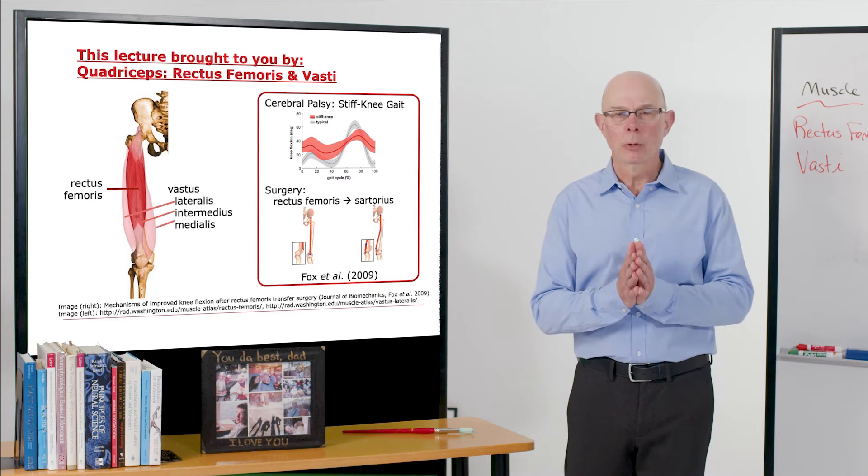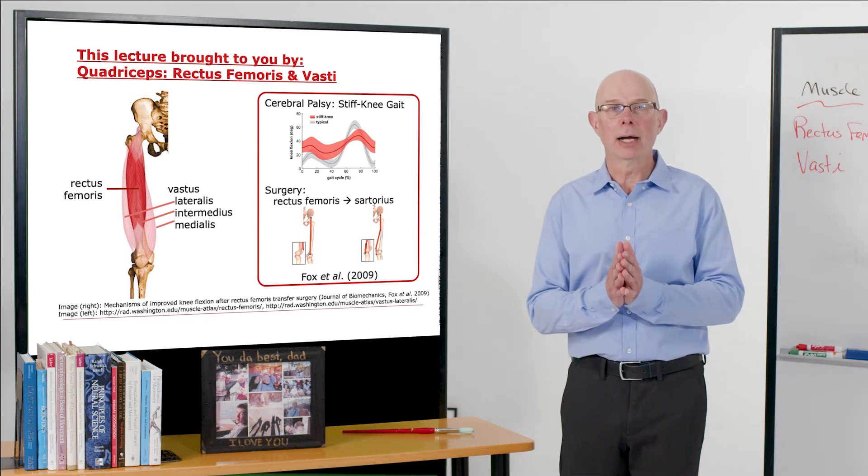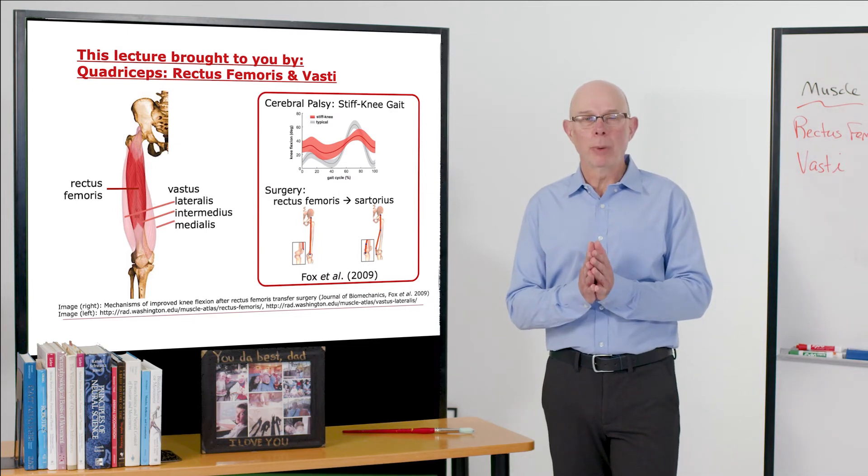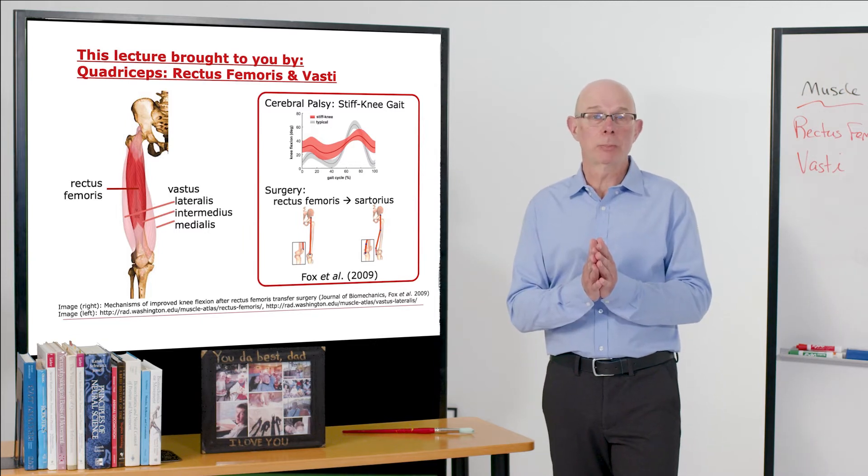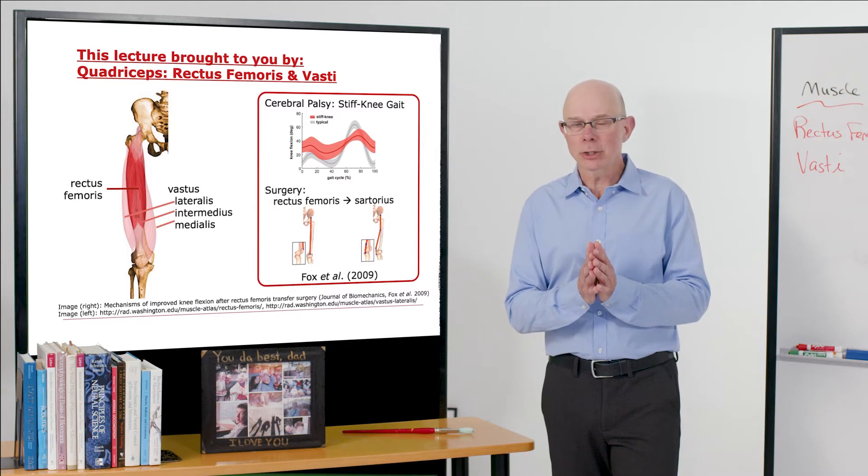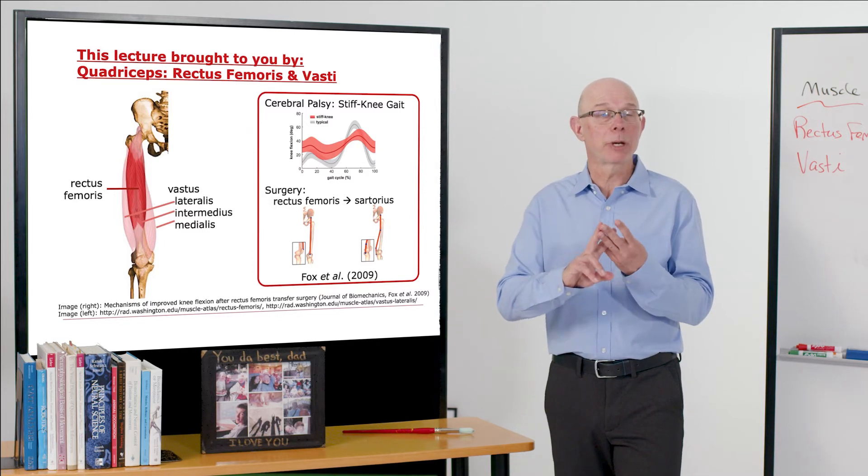Next set of muscles: rectus femoris and the vastae. Together, the rectus femoris and vastae make up the quadriceps. You'd expect four muscles in the quadriceps, and indeed there are. Rectus femoris is one of them, and then there are three vastae.